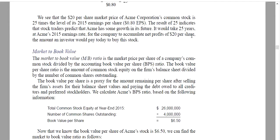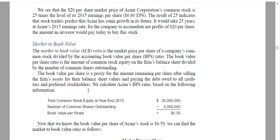The book value per share is a proxy for the amount remaining per share after selling the firm's assets for their balance sheet values and paying the debt owed to all creditors and preferred stockholders.